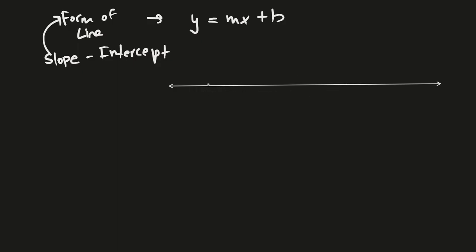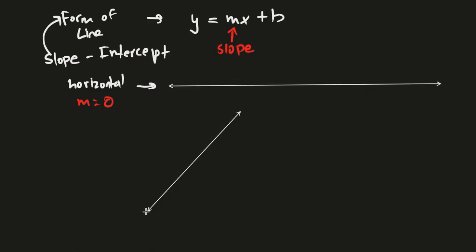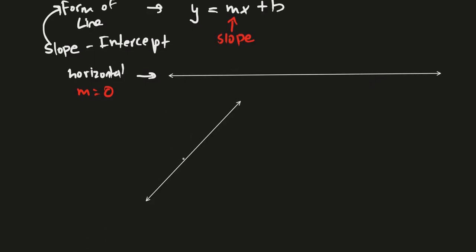This is just a general line, for example — a number line. A line is different from a line segment: a line goes on forever in both directions. Let's say this line is horizontal. This is a horizontal line. The slope of this line — and m is actually the slope — would be zero. So m in this case would be zero.